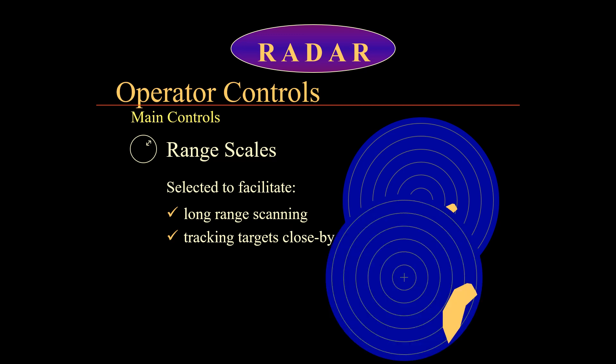Depending on whether you want to track closer or farther targets, you change the range scale. On the screen, the first example showed a target that appeared small because the radar was on long range — but since that target was close to our ship, we should use a shorter range to assess and distinguish its features more clearly. On ships we typically have two radars: one kept on long range scanning and the other on short range scanning, depending on the situation and the officer's preference.